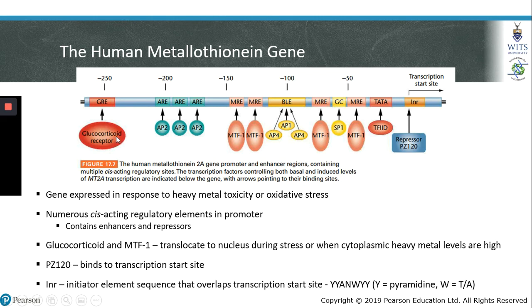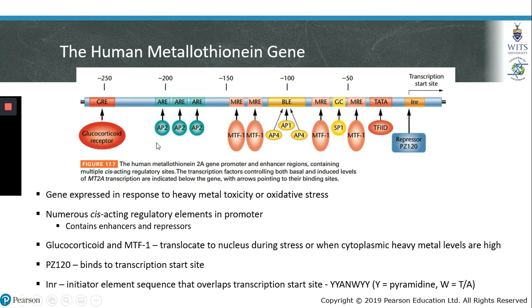The metallothionein gene also has a glucocorticoid receptor binding site called the GRE. The glucocorticoid receptor and MTF1 are usually located in the cytoplasm; however, during stress or in response to high levels of heavy metals, both the glucocorticoid receptor and MTF1 can translocate to the nucleus. When either the glucocorticoid receptor or MTF1 enters the nucleus, they may bind to the promoter region of the metallothionein gene. Once bound, they may recruit other factors or chromatin-modifying enzymes that result in exposure of the TATA box and expression of the gene.